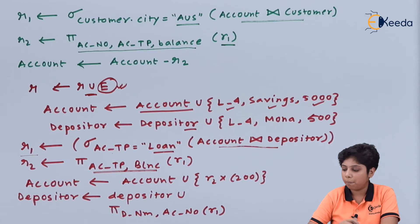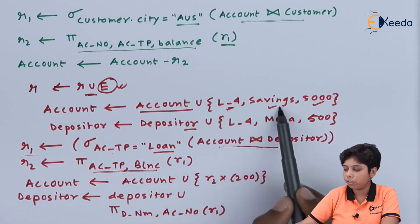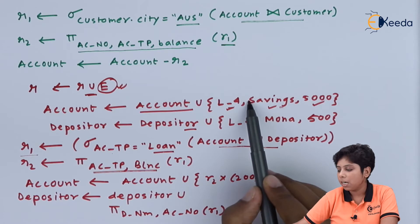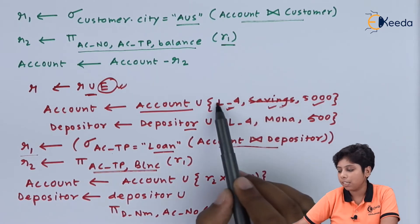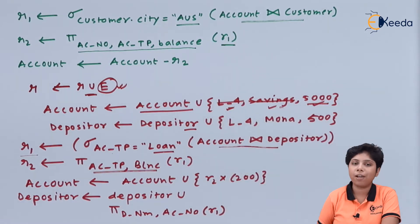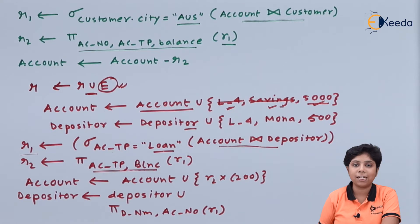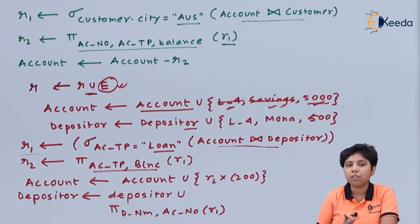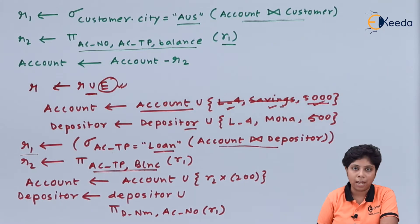For example, when we are inserting L4, savings, 5000 — we could have skipped savings and L4 and just put 5000, so only 5000 will be added. But this must be done with a predicate, because without a predicate we cannot specify where to add that particular value.